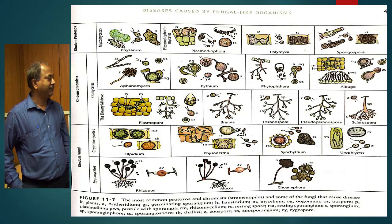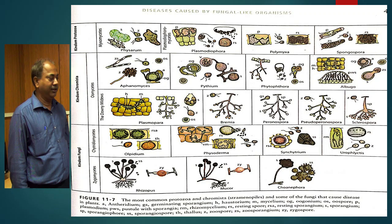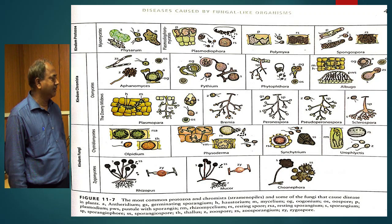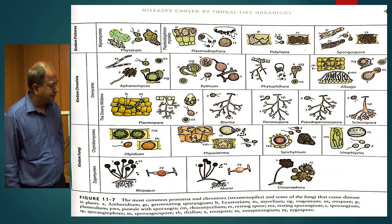In the pictorial classification, kingdom Protozoa has Myxomycota with Physarum, then Plasmodiophoromycota with Plasmodiophora, Polymyxa, and Spongospora. Under Oomycetes: Aphanomyces, Pythium, Phytophthora, and Albugo. For the downy mildew fungi: Plasmopara, Bremia, Peronospora, Pseudoperonospora, and Sclerospora are the downy mildew fungi.